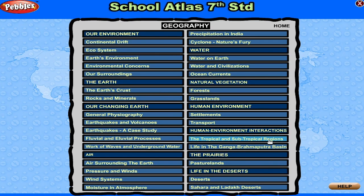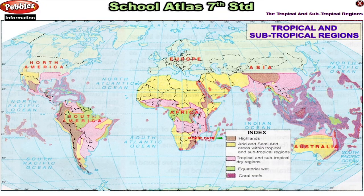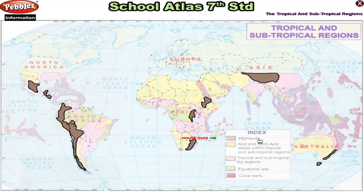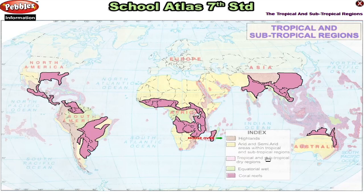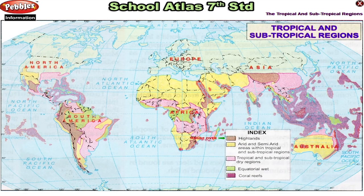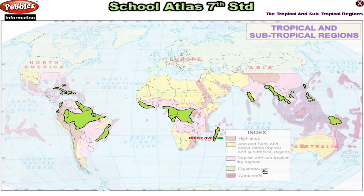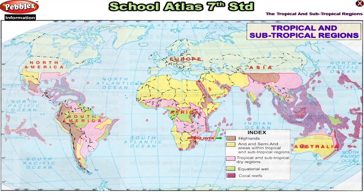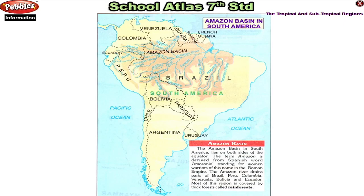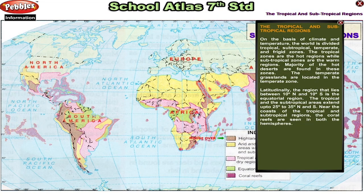Geography: The tropical and subtropical regions. Human environment interactions — the tropical and subtropical regions.